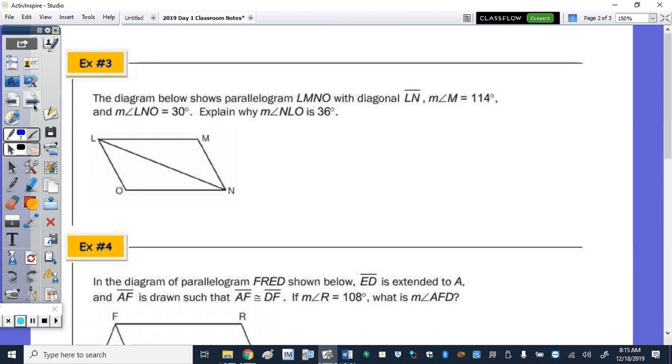Alright, in number 3, we have parallelogram LMNO with the diagonal LN drawn. So that the measure of angle M is 114 degrees. And then I know that O is also 114 degrees, because opposite angles of a parallelogram are congruent. LNO is 30. So LNO is 30 degrees.